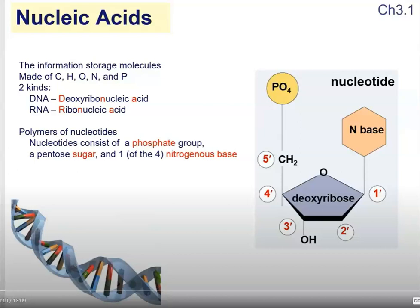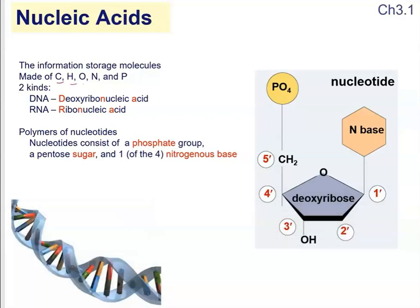This is another polymer macromolecule. These molecules are made up of carbon, hydrogen, oxygen, nitrogen, and phosphorus. So there are two kinds of nucleic acids.